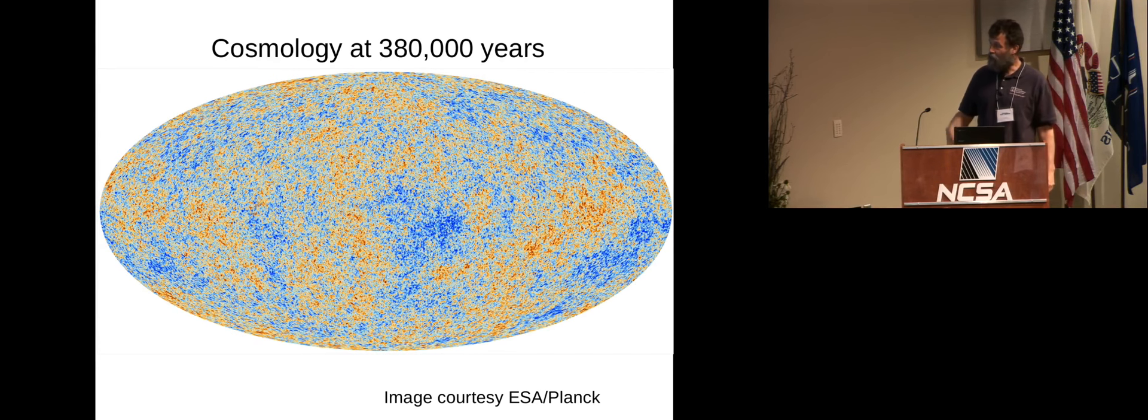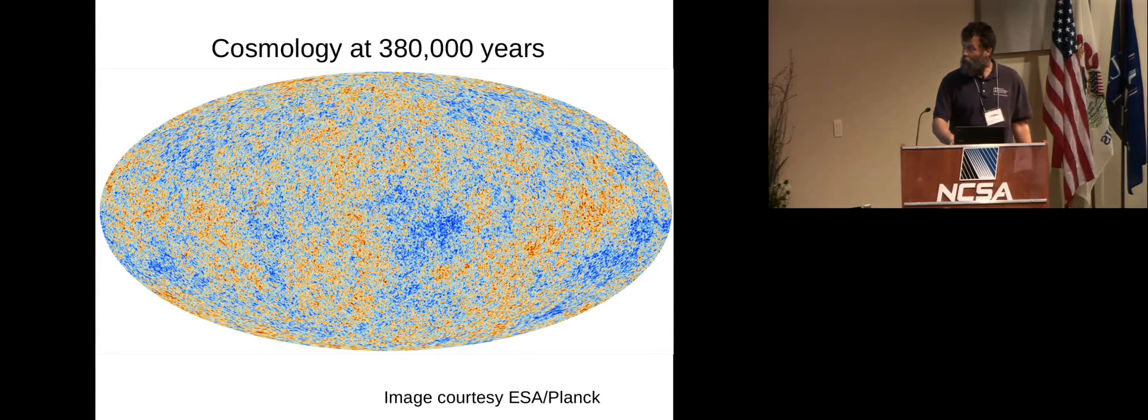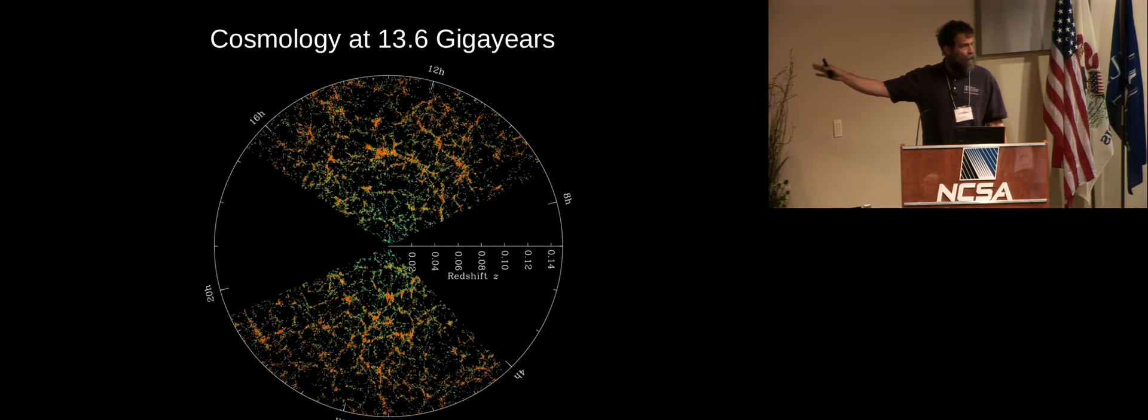They make what we call galaxies, and we can see, if we look at a map of the galaxies, you see that there are these bubble-like structures, and those directly map back to those temperature fluctuations that you saw in the previous map.